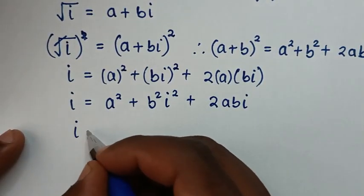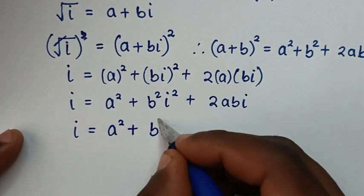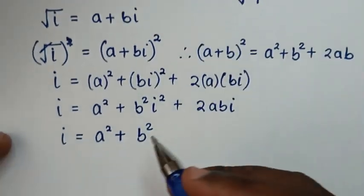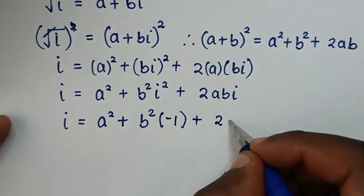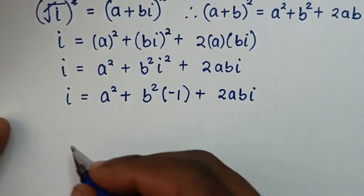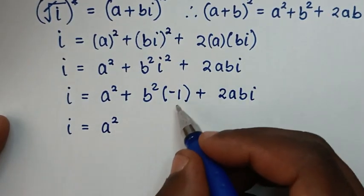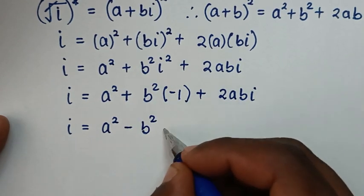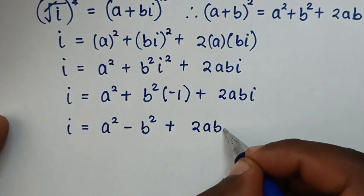In the next step, it will be: i is equal to a² plus b²·i², and i² is negative 1, so that becomes negative b², then plus 2abi. Then it will be: i is equal to a² minus b², then plus 2abi.